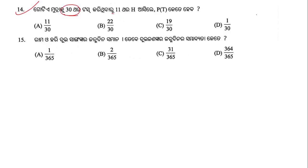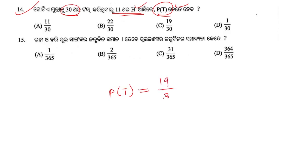Question number 14: A coin is tossed 30 times and there are 19 tails. The probability of tails is 19/30. Option C is the right answer.